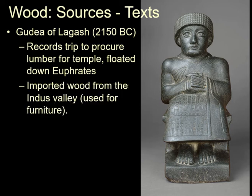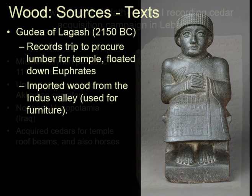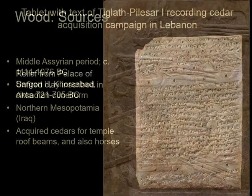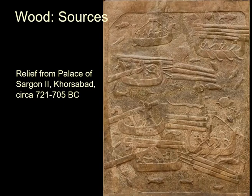In particular, when you're building big temples you need big bits of wood to create the roof. And so for that the local trees would not work very well. Also recorded: importing wood from the Indus Valley, which was used for furniture. This clay tablet records a trip by Tiglath-Pileser to acquire cedar in Lebanon for roof beams — he also got some horses from there, although I don't quite know why. Here we have these people floating their boats down the Euphrates with all these big pieces of wood to build a palace somewhere.